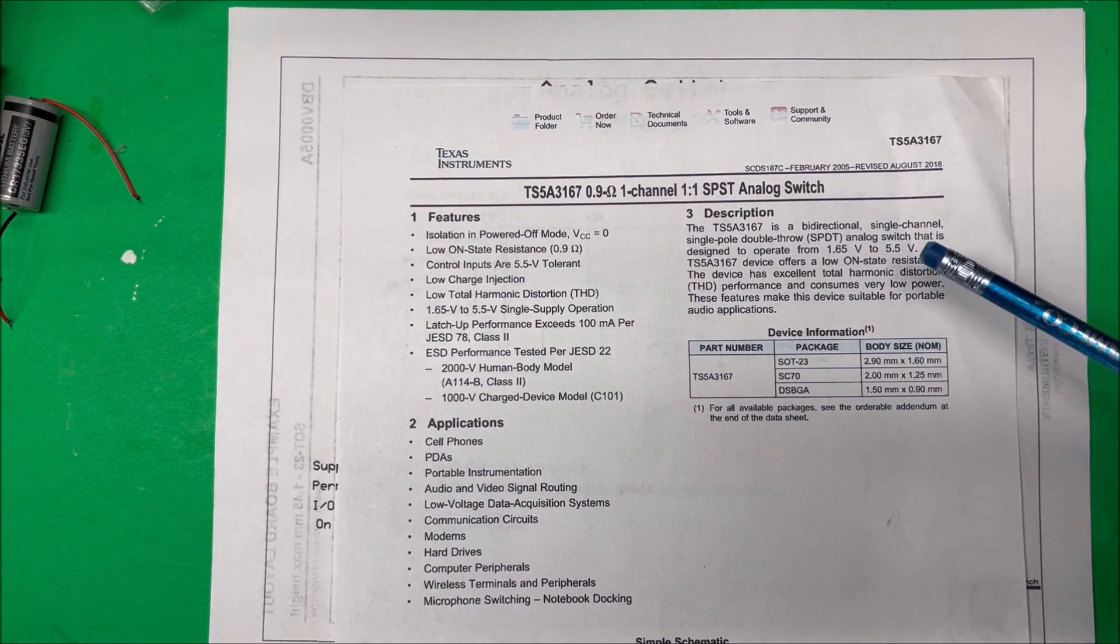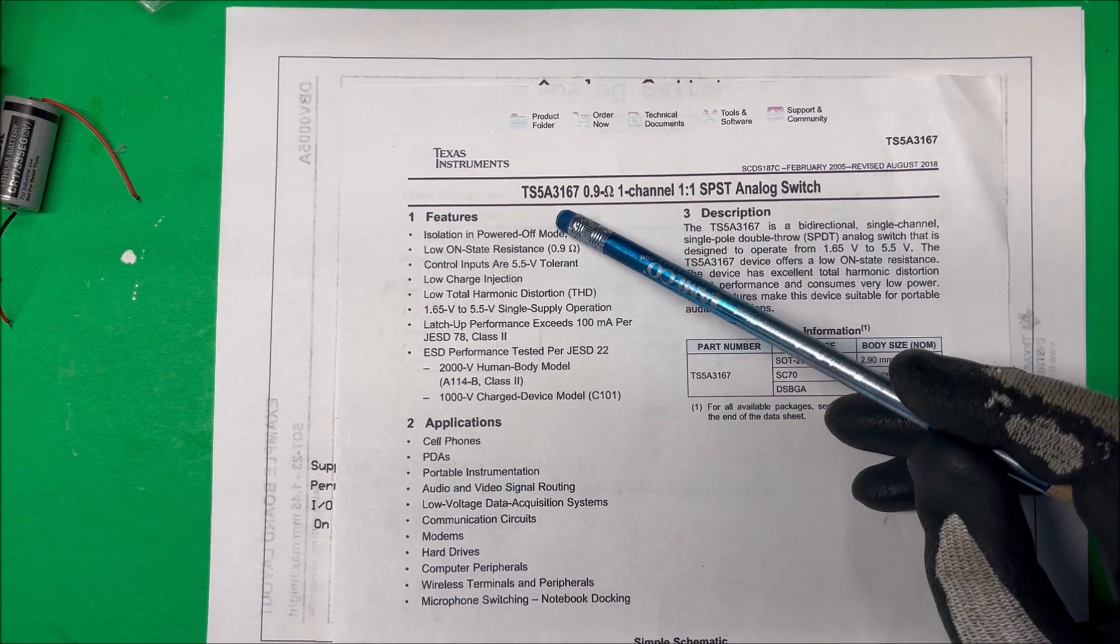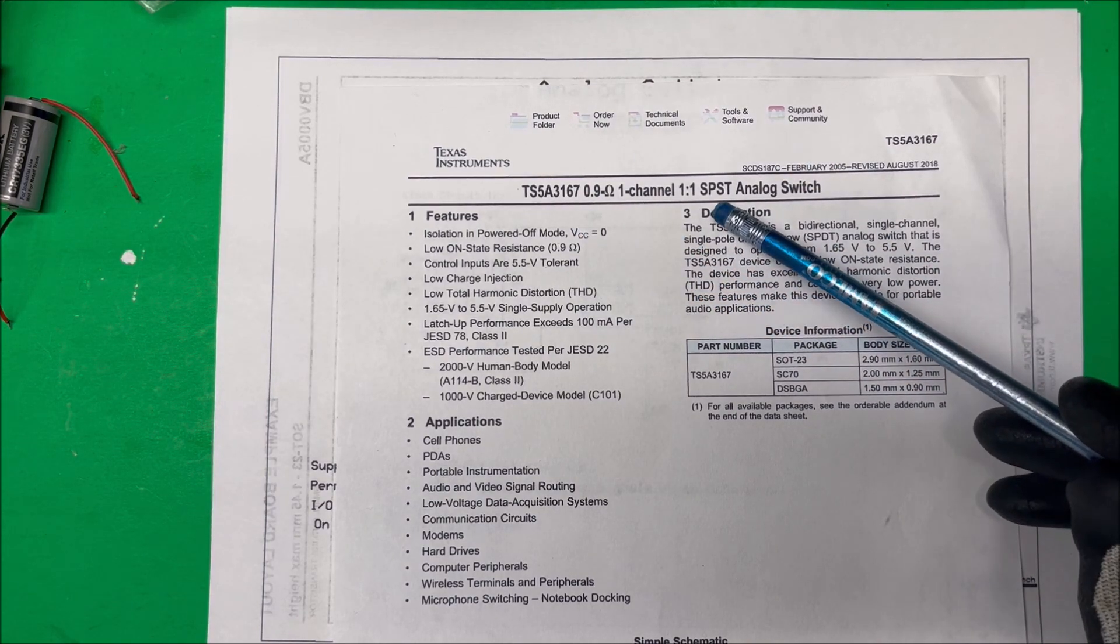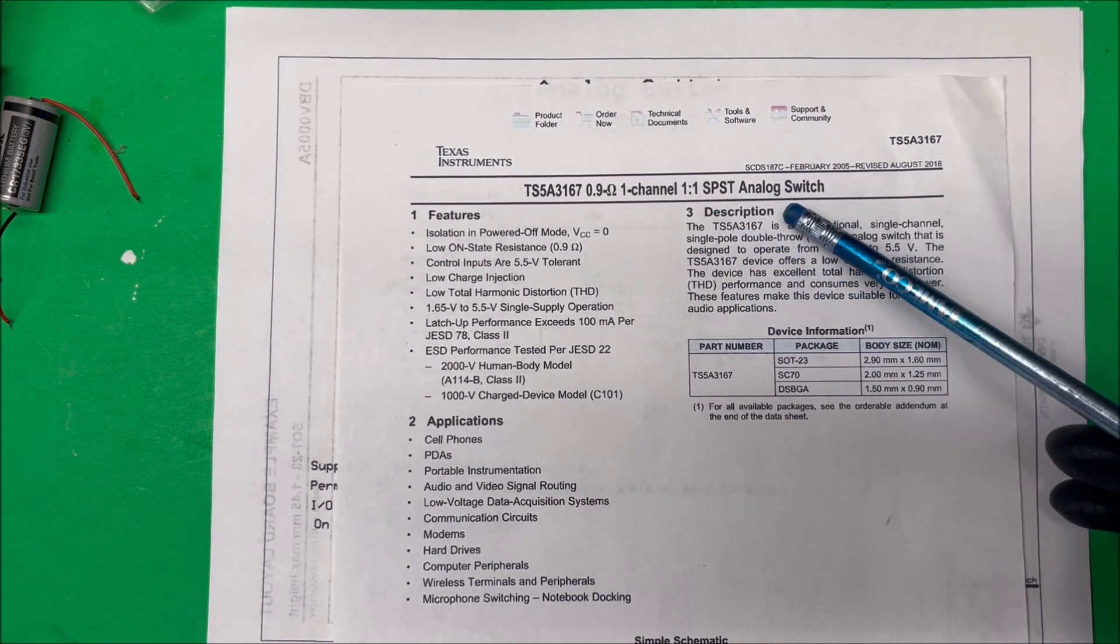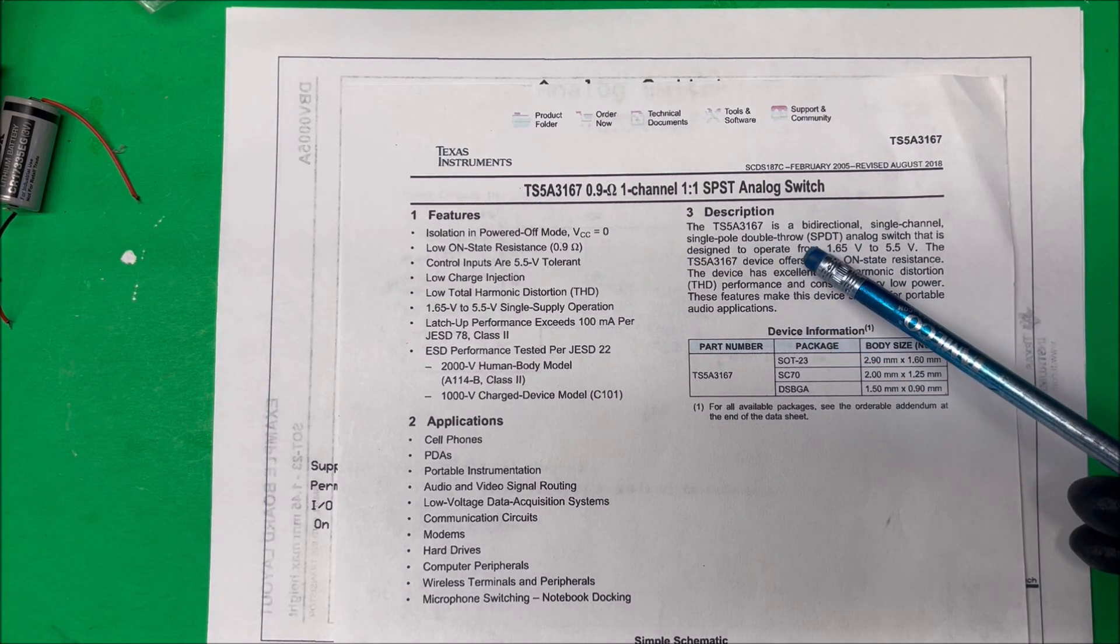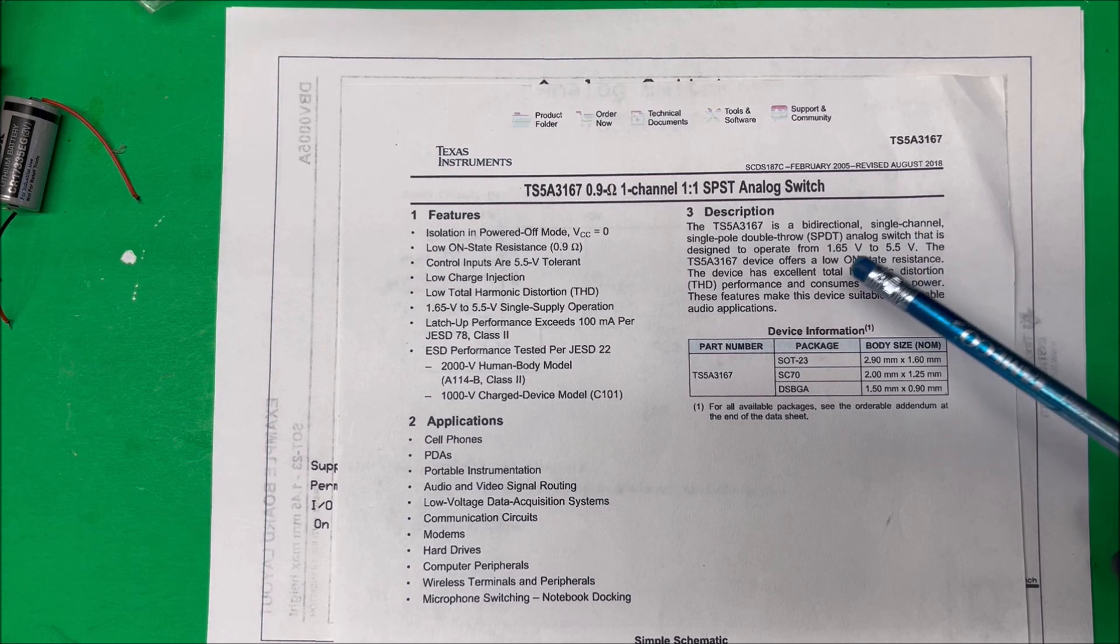Let's take a look at another analog switch, a TS5A3167. This one's a single pole single throw switch, an analog switch, but in the description it says that it's a bidirectional single channel single pole double throw switch.